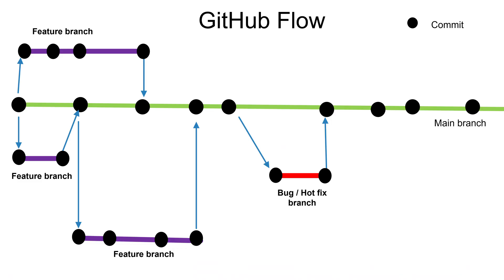So we made a single change, but apparently multiple users can create their own feature branches and start working on them. Once all the changes have been verified they can merge back to master — master and main are the same. At this point all the features have been merged to the main branch and we are good to deploy to a lower environment or even to production.